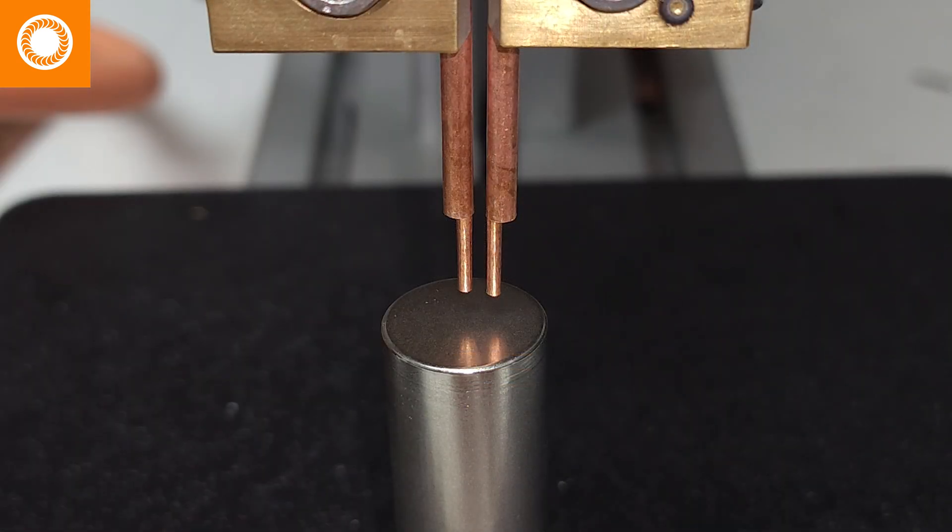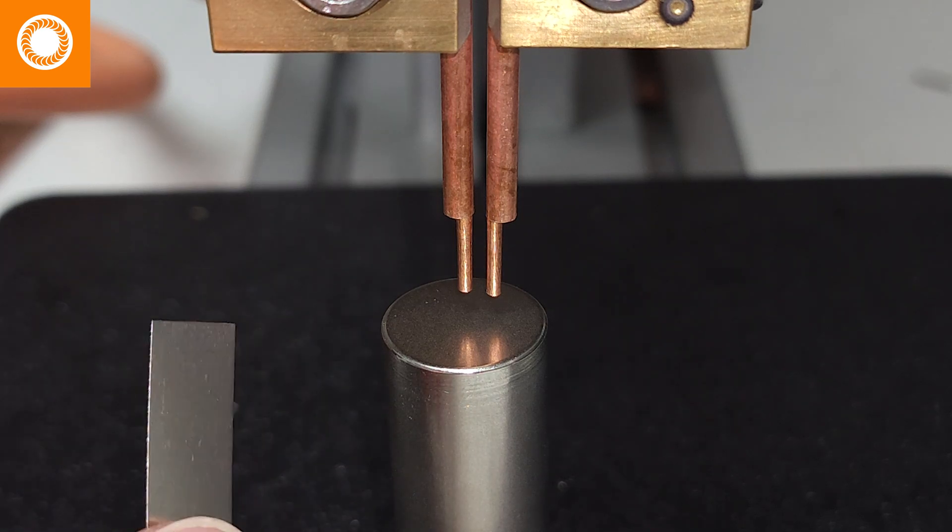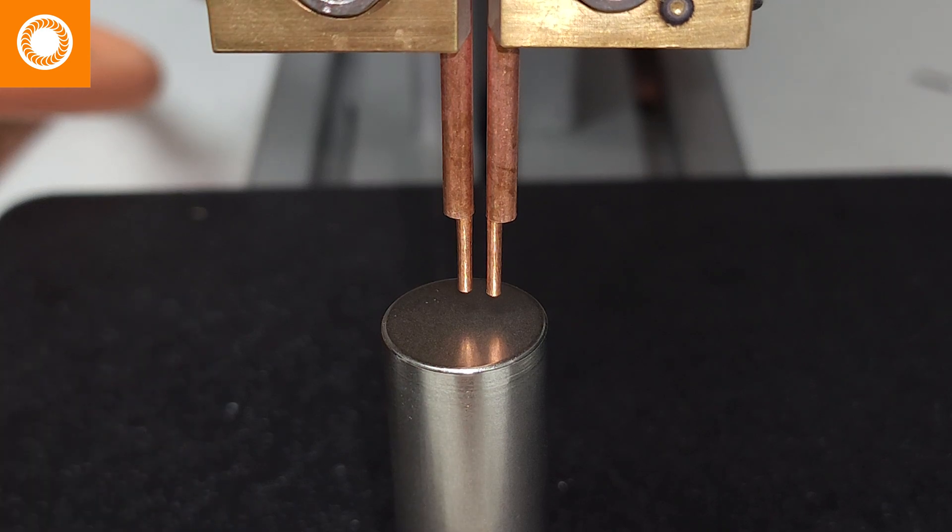Regardless of the CD welder that you're using from Sunstone, I like to start lower than I think as far as my power is concerned and then I adjust up from there. Let's say I don't know what the settings would be for this five thousand nickel shim.